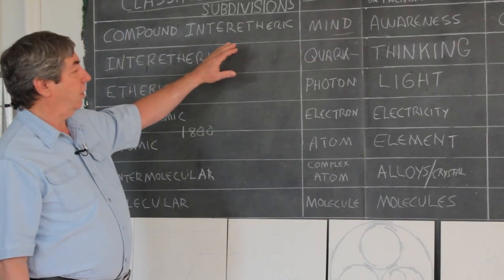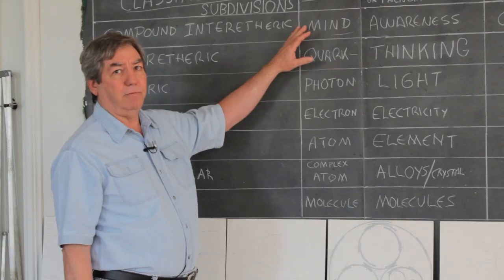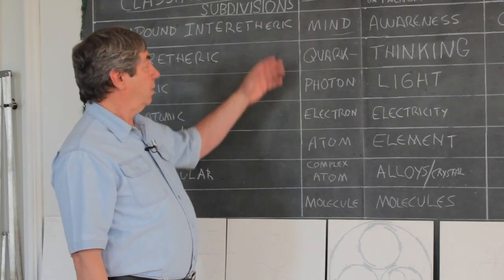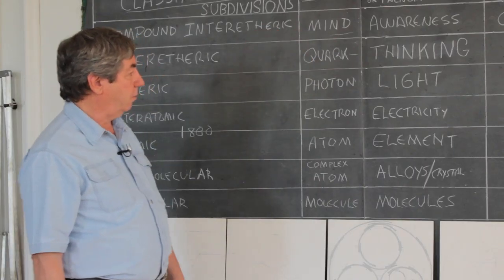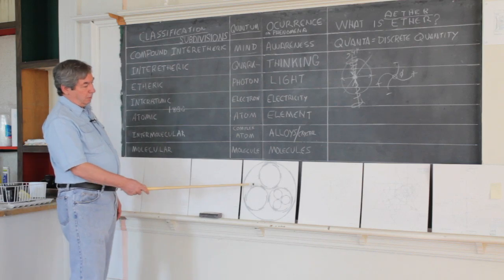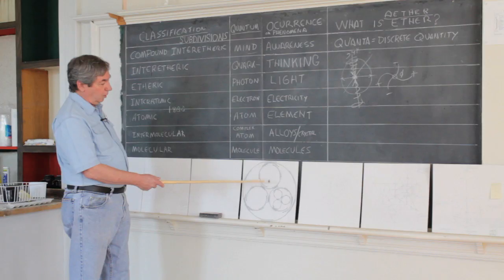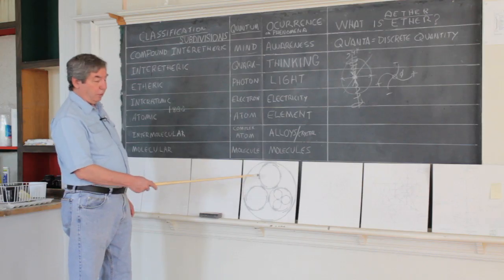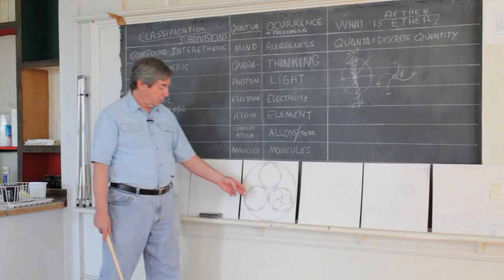Then he dissociated that and he got up to what he called the mind level. Compound inter-etheric is pure mind force. This is the life force, the mind force, the celestial radiation comes in at these levels. His various designs of his molecule were illustrating the triune nature of the forces.